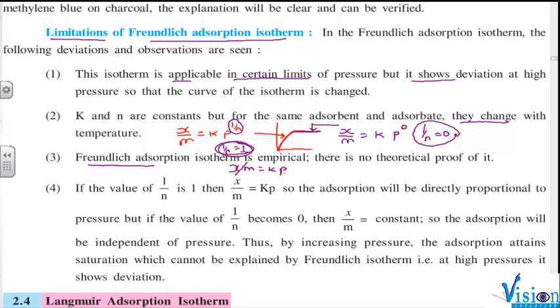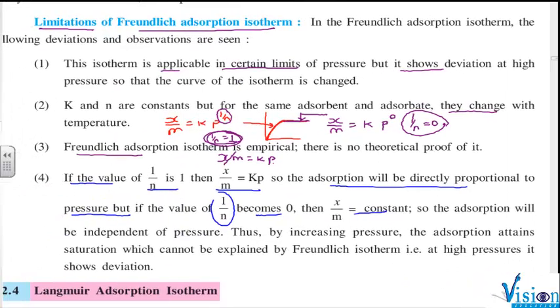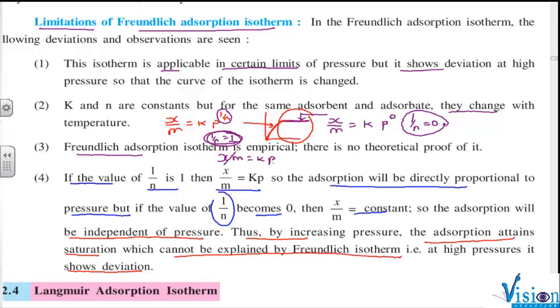He could not explain that part - for one temperature, how can n value be selected such that it has two values? Same n cannot be kept to two values. So over here, if the value of 1 by n equals one, then x by m equals kp, so the adsorption isotherm will be directly proportional to the pressure. But if the value of 1 by n becomes zero, then x by m is constant. So the adsorption will be independent of pressure. Thus, by increasing pressure, the adsorption attains saturation, which could not be explained by adsorption isotherm of Freundlich. So at higher pressure, Freundlich adsorption isotherm shows deviation.